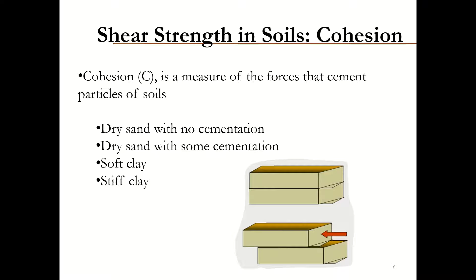The angle of internal friction value for sandy soil will be higher, and the cohesion for fine-grained soils like clay will be higher than that of sandy soil. For purely cohesive soil, it will not have any angle of internal friction — all the shear strength will come from cohesion. For cohesionless soil like dry sand with no cementation, the shear strength parameter will come entirely from its angle of internal friction, so it will not have any cohesion.